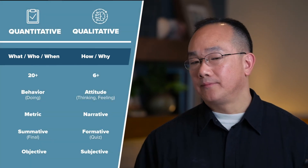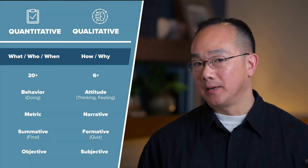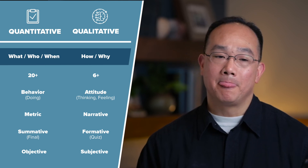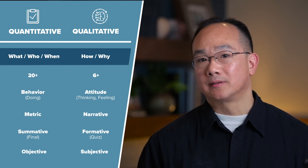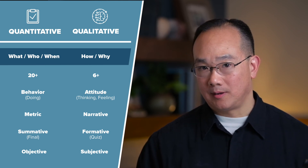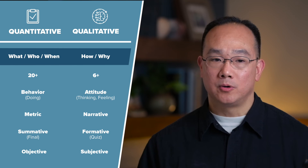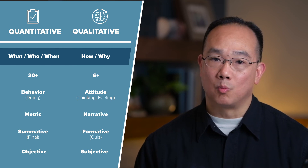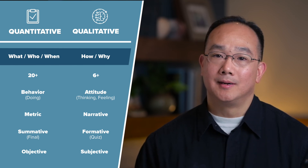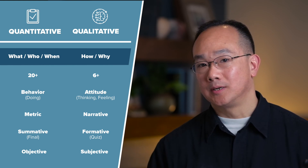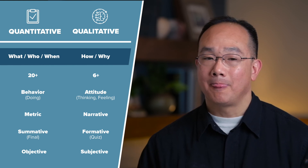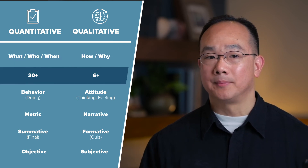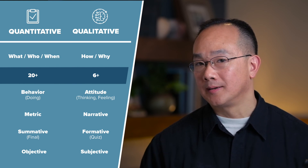We have two different kinds of research: quantitative and qualitative. Quantitative is really focused on the what, and also the who and the when — primarily, what happened. With qualitative, you're really interested in the why. With quantitative, you may have large samples — I'm listing 20 plus here, but in actuality you may need 1,000 or even 10,000 users for that data to be meaningful.